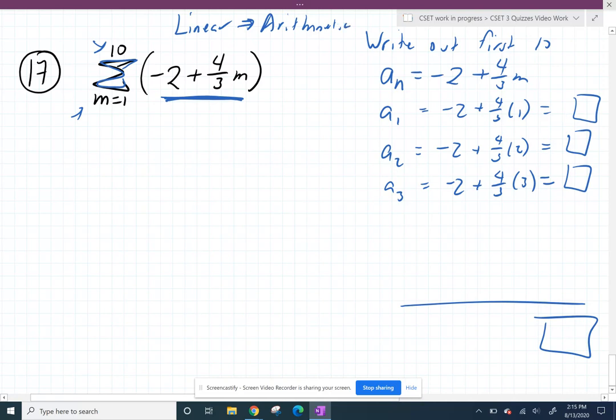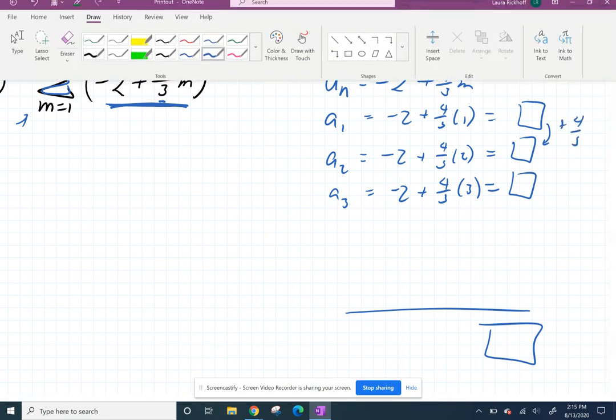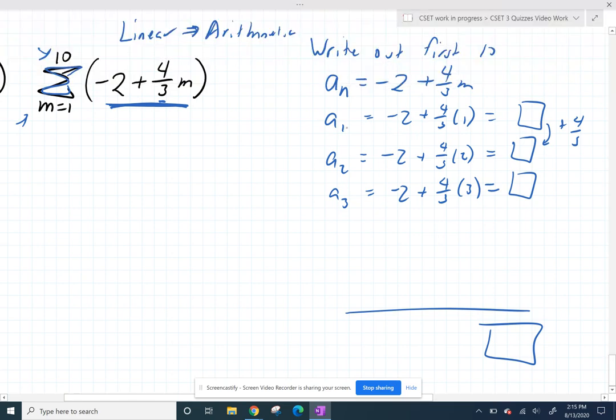If we were to write out these terms, we would see that you're adding the same thing every time. You're adding, it should be four-thirds every time, because that is the slope here. That is your common difference here. So let's figure this out, just so you can trust me. For my first term, when I plugged in a 1, negative 2 plus four-thirds. My gosh, the hardest part is adding fractions, right? So that's negative six-thirds plus four-thirds is negative two-thirds. And then for a sub 2, when we plugged in 2, we're getting a negative, let's see, so that's negative six-thirds plus eight-thirds.